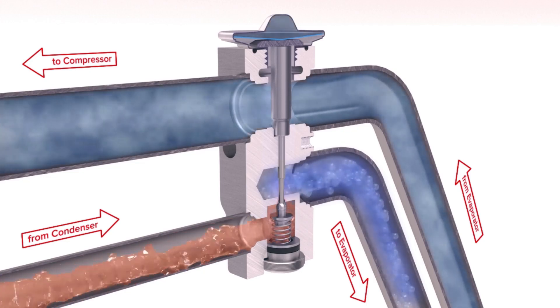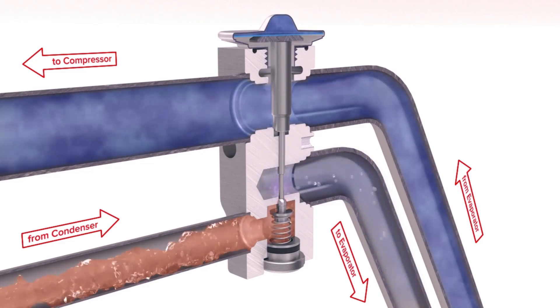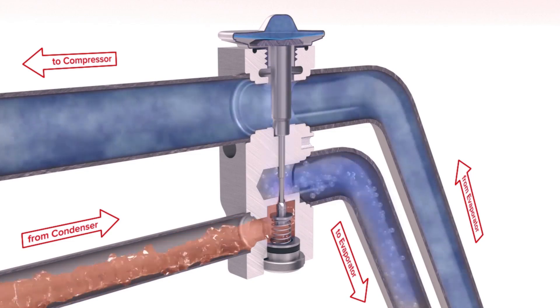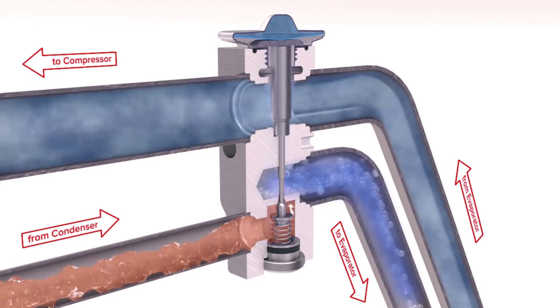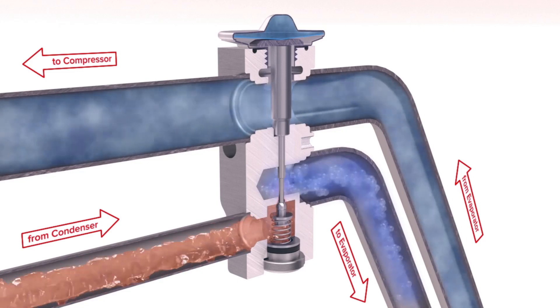The expansion allows the pressure to reduce, which also reduces the temperature, and this causes the refrigerant to again change state from a warm, high-pressure liquid into a cooler, low-pressure mist that is able to more easily absorb heat when it passes through the evaporator.